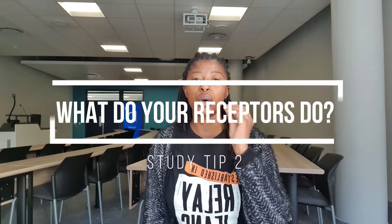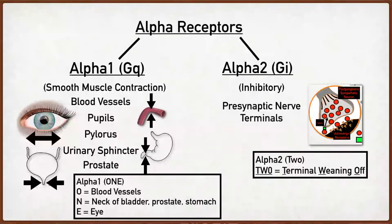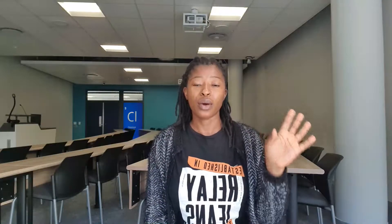Second, you need to learn what your receptors do. In the body we have different receptors — alpha, beta, calcium channels, and others. You need to know what all of those receptors do, what happens if you block them, and what happens if you stimulate them. Because all the drugs you're going to be learning will interact with these receptors, and if you know what happens when a receptor is blocked or stimulated, you can figure out the resulting side effects.